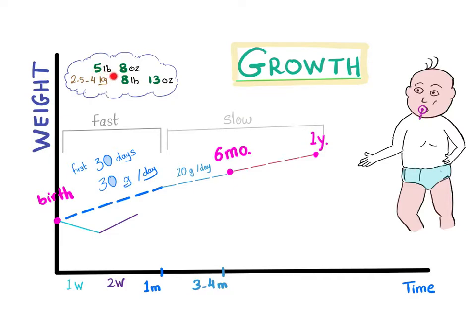5 pounds and 8 ounces up to 8 pounds and 13 ounces. This is the normal range. Just remember, 5 plus 8 equals 13. This equals 2.5 to 4 kilograms in the metric system. So, the baby starts here at birth.